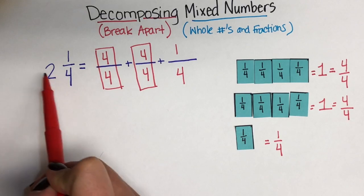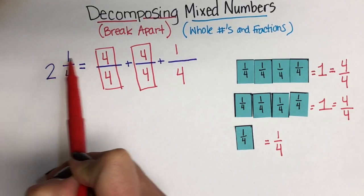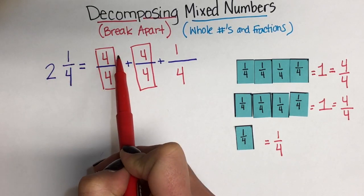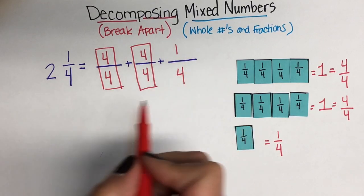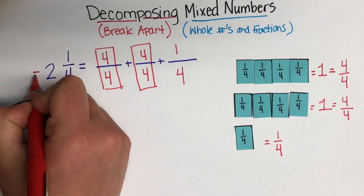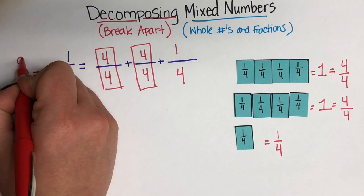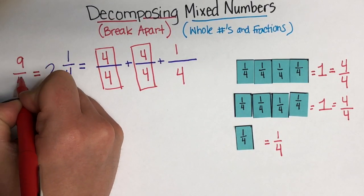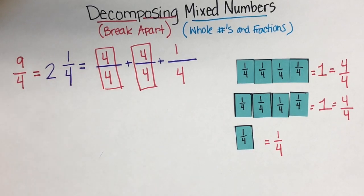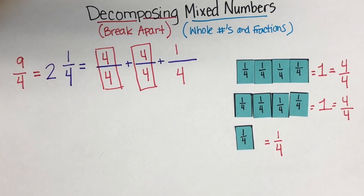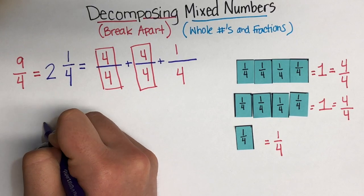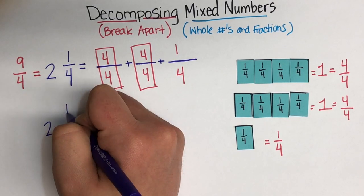But, for a second here, take another look at 2 and 1/4. We can actually rewrite it as the sum of 4/4 plus 4/4 plus 1/4, which is the same as 9/4. So, 9/4 is equal to 2 and 1/4, which is also equal to 4/4 plus 4/4 plus 1/4. All of this means the same thing.